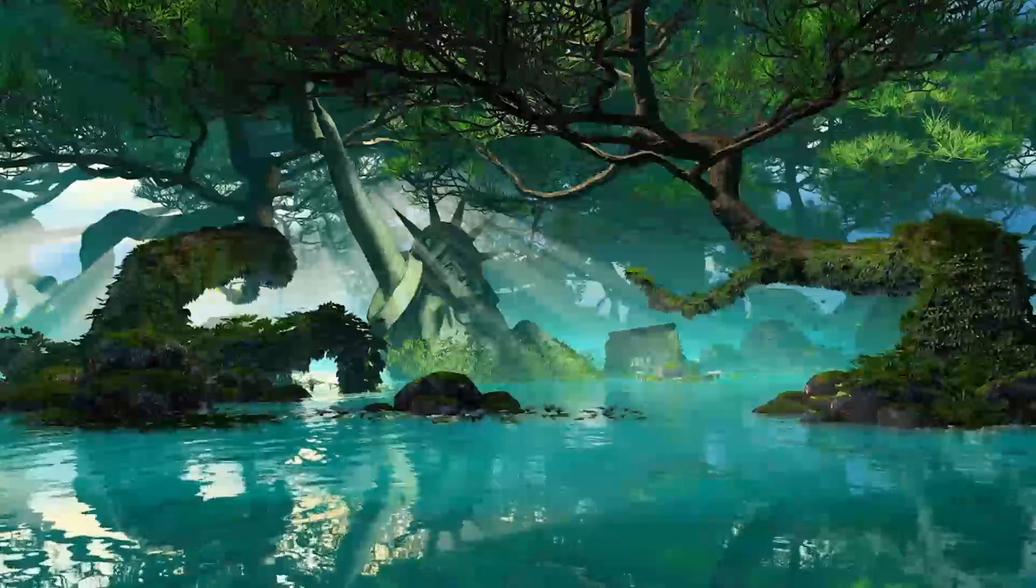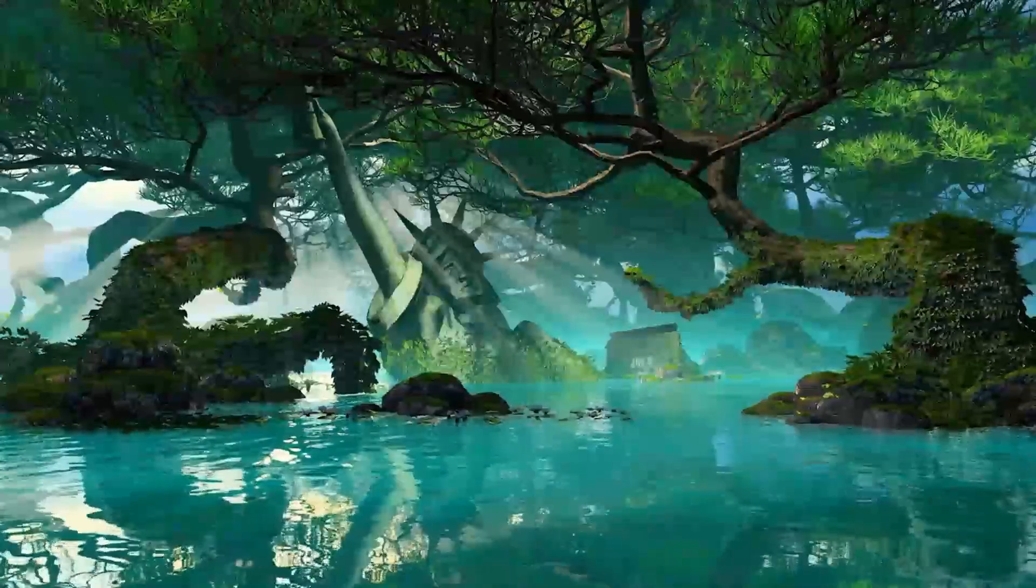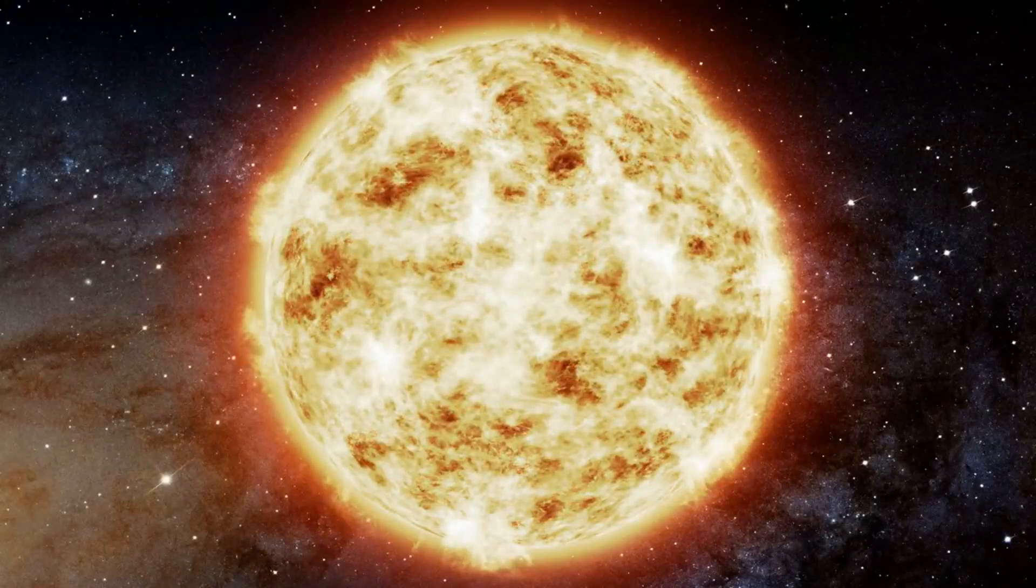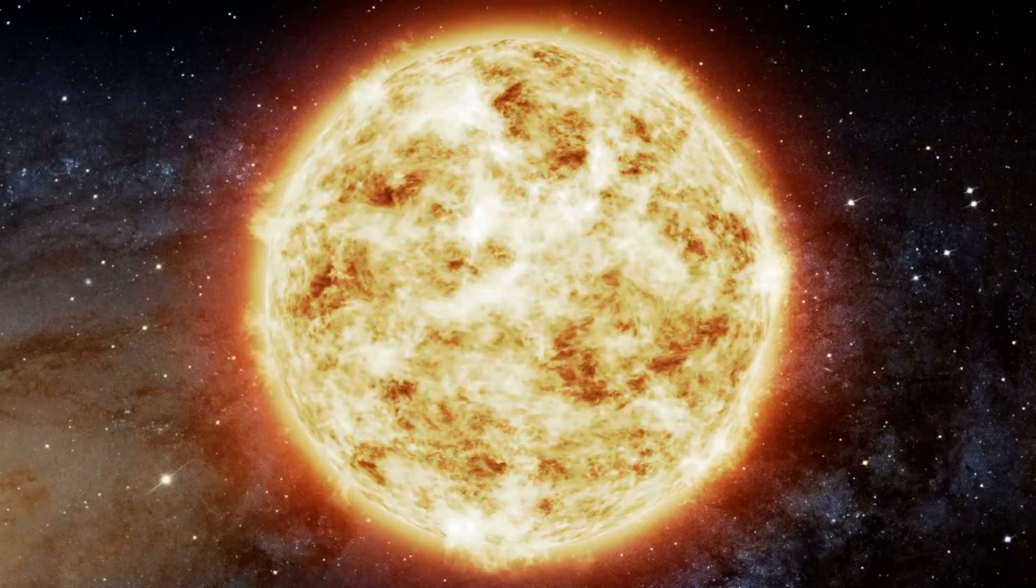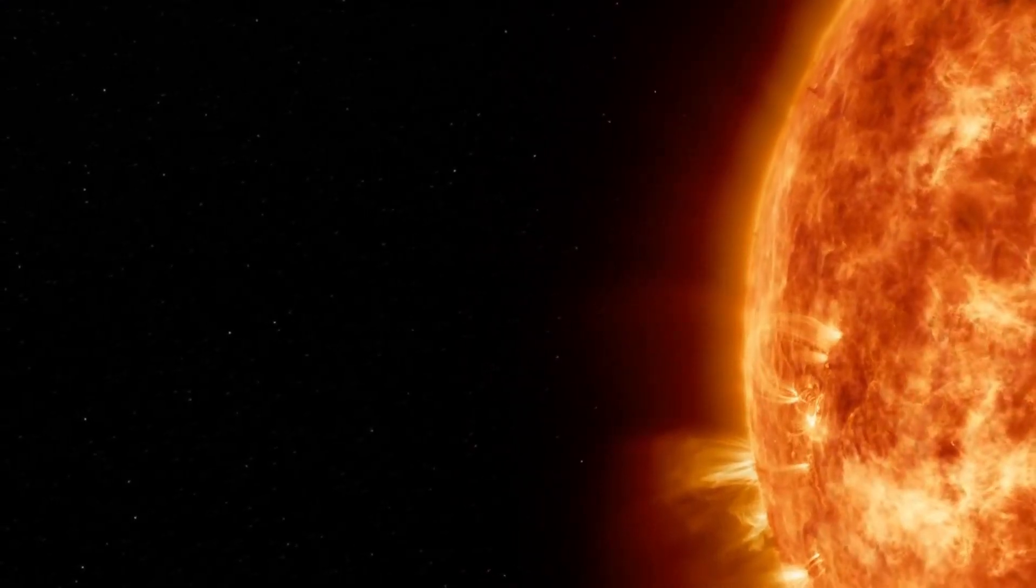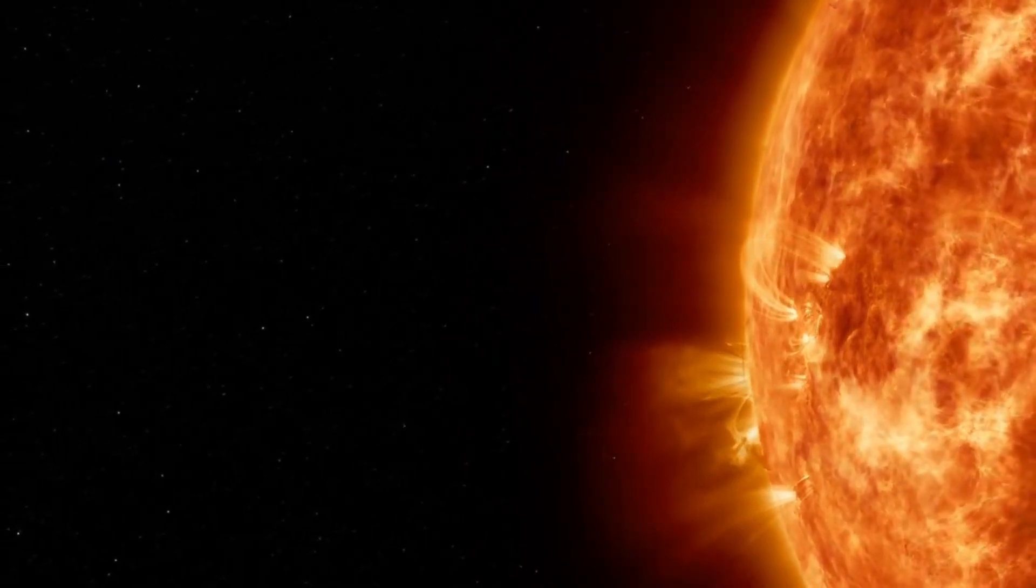Long before that, however, life on Earth should already have come to an end. As the Sun burns through its hydrogen, the temperature at its core will gradually rise, causing our star's total luminosity to slowly increase, brightening by about 10% every billion years.